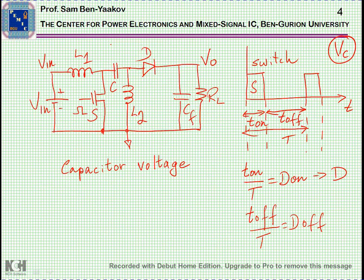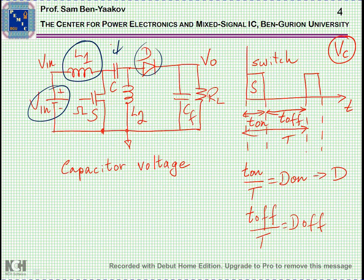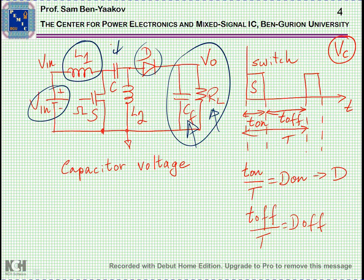Now, the SEPIC circuit consists of an input power source, an input inductor, a coupling capacitor, and a diode — the output section with a filter capacitor and a load. The RL represents the load, which could be any device such as a smartphone or anything else. There is also an inductor connected between a node and ground. A key point to start the analysis is the question: what is the steady-state voltage on the coupling capacitor?